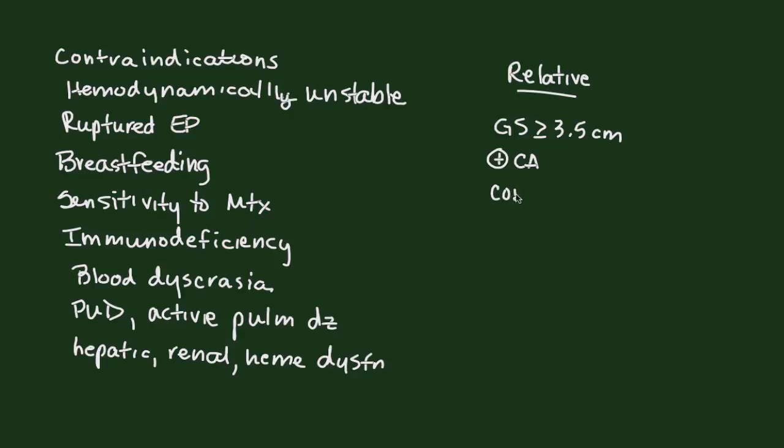And then also, if you have somebody who has difficulty with compliance, in other words, transportation or communication or access to facilities, any sort of issues with being able to return to the office for follow-up, then those patients actually should be operated on because what you don't want to do is give someone methotrexate, have them go home and never see them again, or worse, have them rupture at home and not be able to return for medical care.